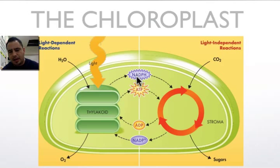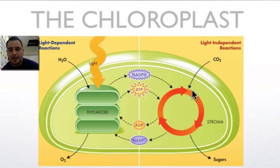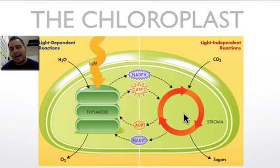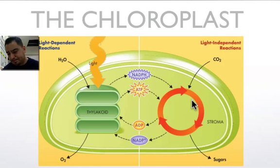The electrons from water are transferred onto NADPH and ATP, charging these batteries so they can convert carbon dioxide into sugars. This is why we need NADPH and ATP for the next important reaction: the light-independent reactions, also called the dark reactions — not because they happen in the dark, but because they don't require light. These reactions are also called the Calvin cycle.